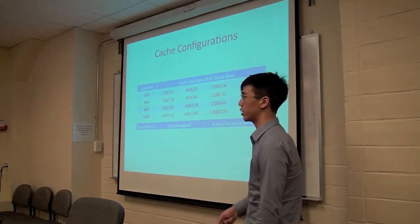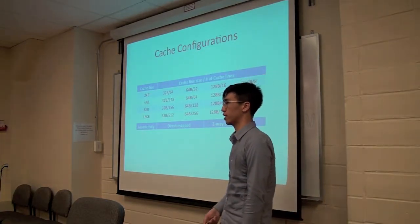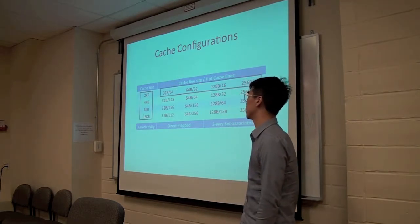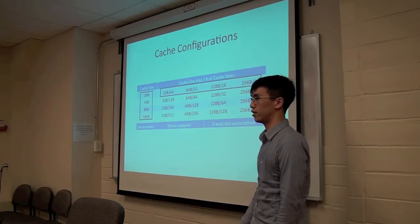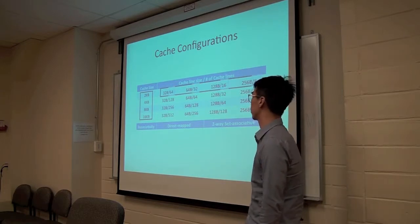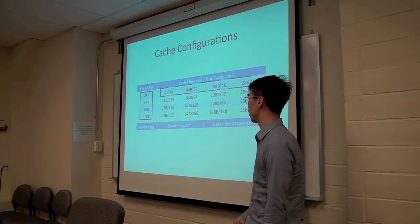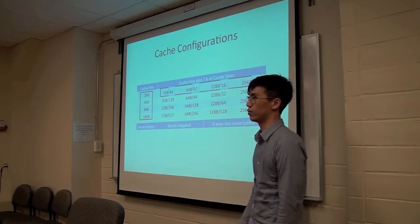For each one of these architectures, we evaluated 16 different cache configurations, four different cache sizes, and for each cache size, four different line sizes. And as the line size increased, the number of lines in the cache also decreases accordingly. And we also evaluated the direct map cache versus two-way set associative cache.